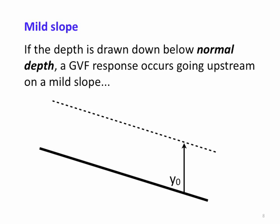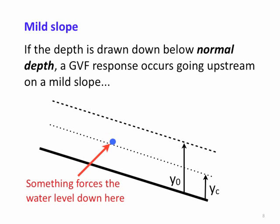Again, on a mild slope: if something forces the water level down below the normal depth but you're still above the critical depth, then you are a subcritical flow below the normal depth. The adjustment is upstream — there is a GVF response curve where the water surface profile adjusts upstream to move back to the normal depth.